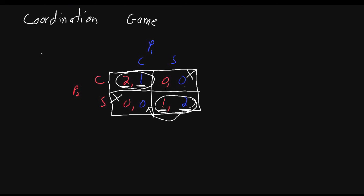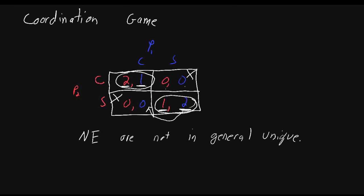This gives us a key insight: Nash equilibria are not necessarily unique. In other words, games can have more than one Nash equilibrium. Some games only have one, but others can have more than one, and we see this through the coordination game.